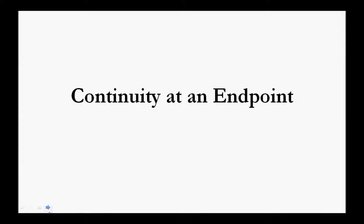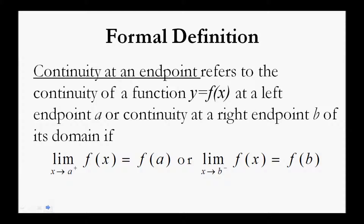Continuity at an endpoint, formally defined, is the continuity of a function y equals f of x at a left endpoint a, or continuity at a right endpoint b of its domain, if the limit of f of x as x approaches a from the right equals f of a, or the limit of f of x as x approaches b from the left equals f of b.